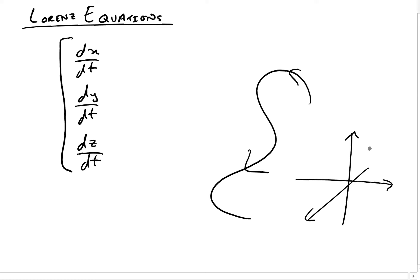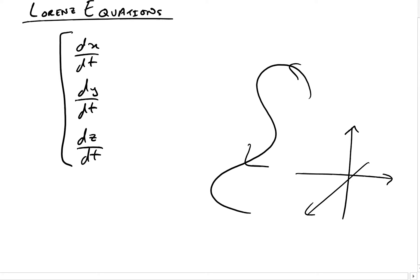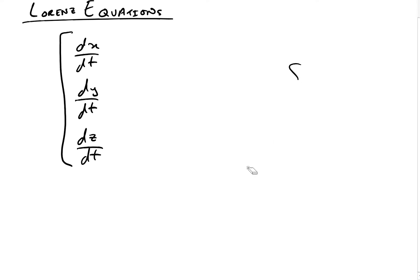Phase portraits are hard to draw in higher dimensions. The whole point of a phase portrait is that we can see what happens to solutions and get the information we need from them, because quite often we're just interested in how the solutions are behaving. If we can't draw them, then the phase portrait becomes less useful for higher dimensions. We're going to discuss a situation linking into an example of three dimensions with three variables: X, Y, and Z.